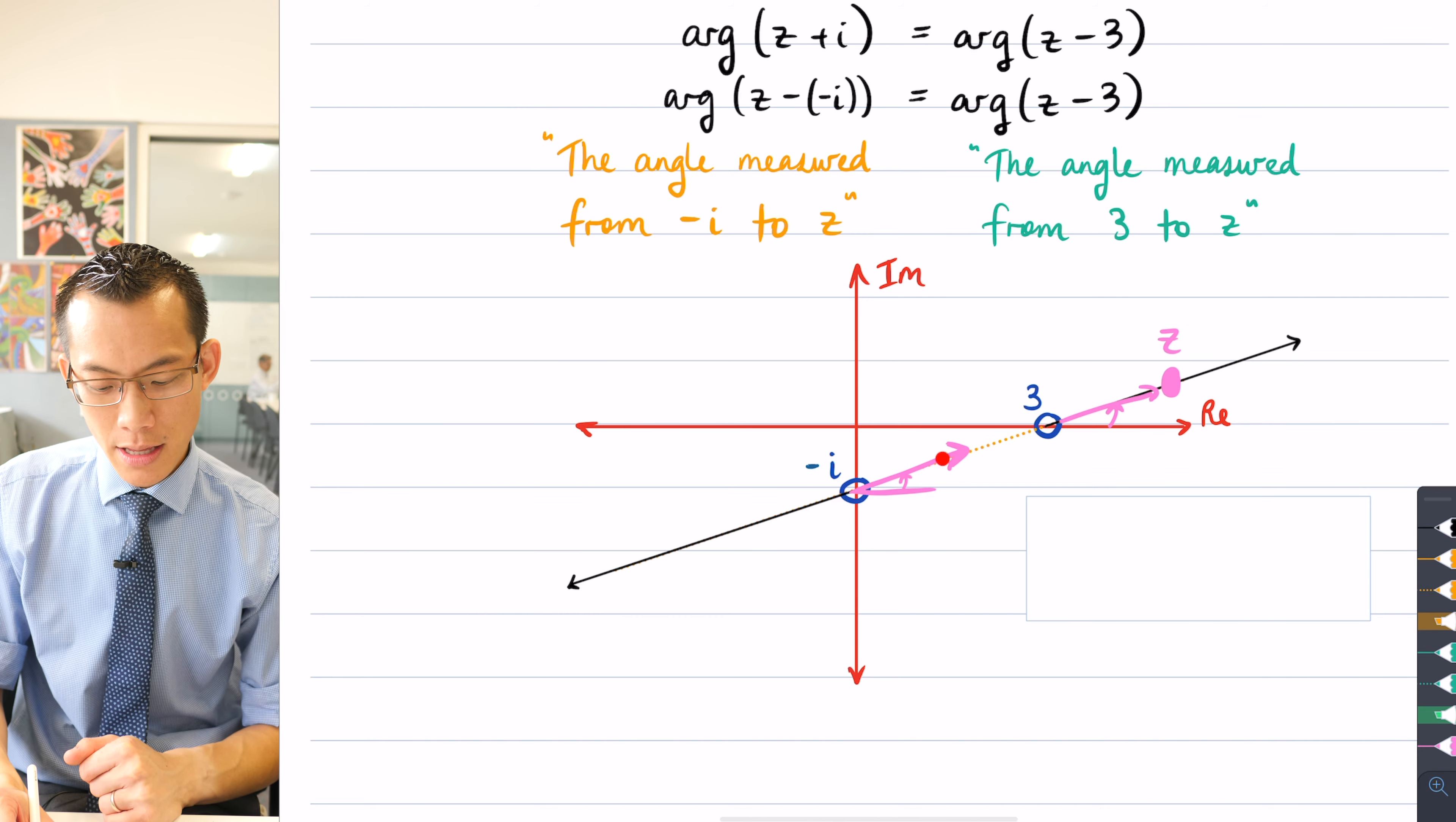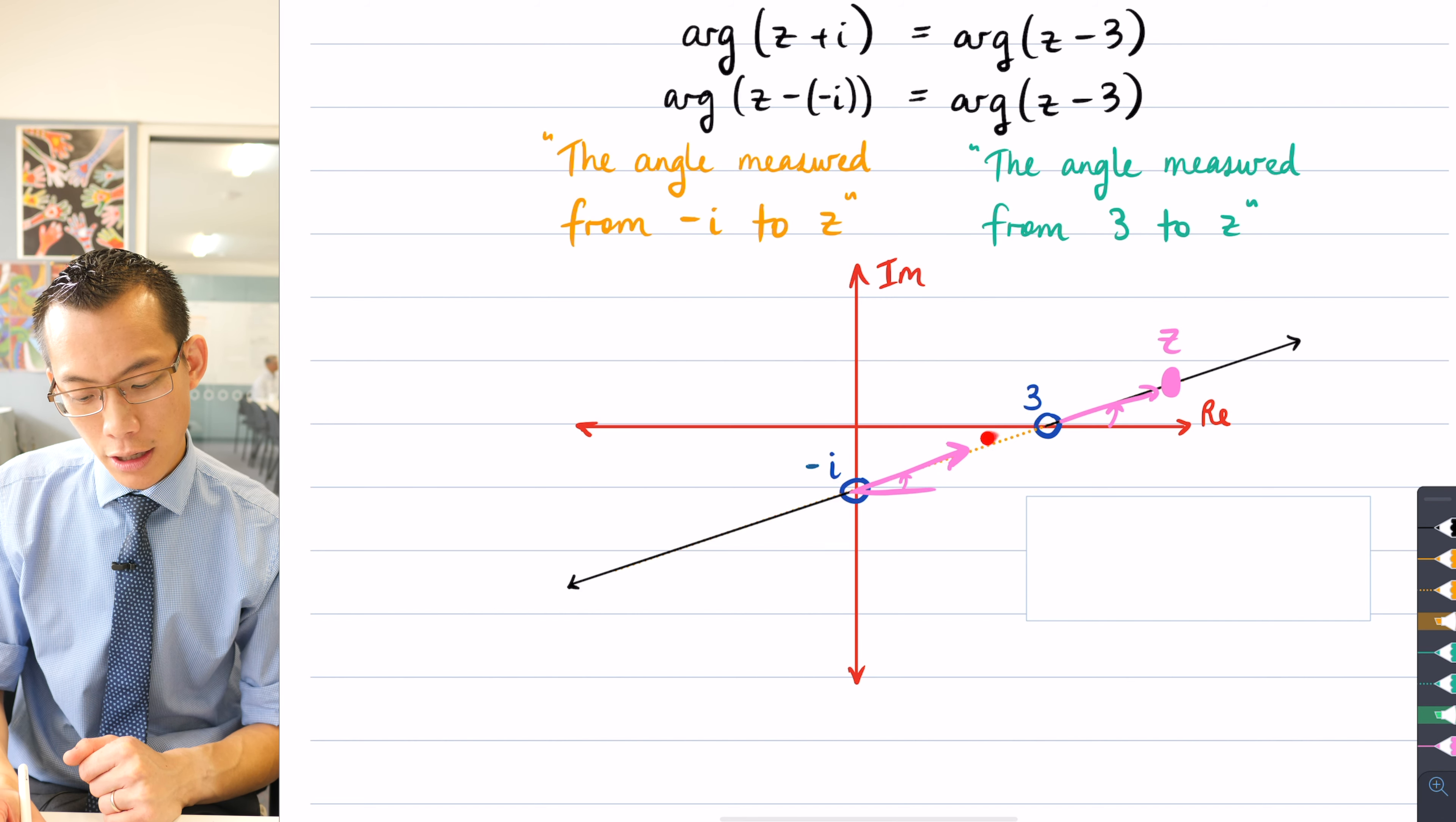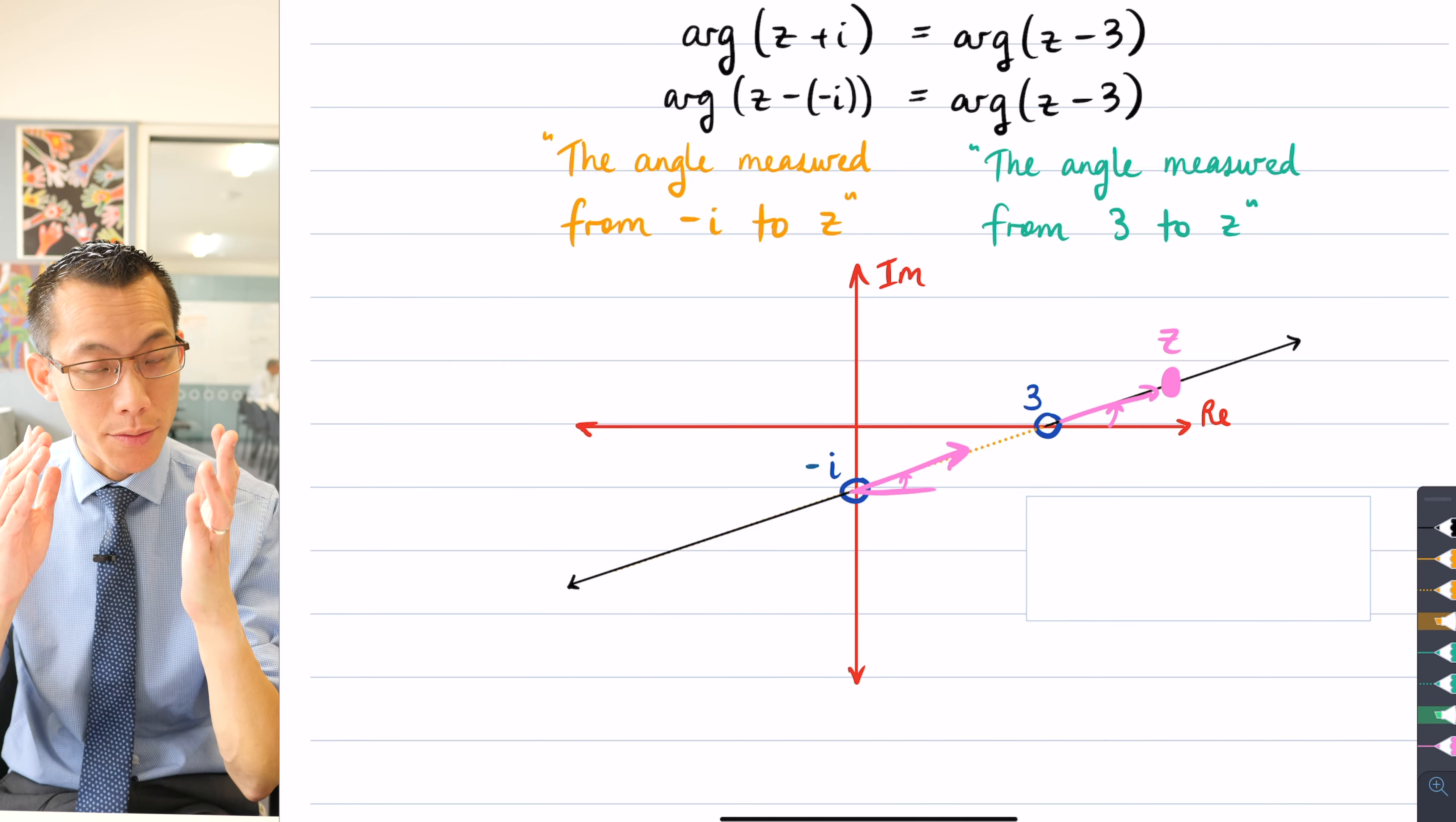However, we did notice that in the middle here, if we picked a spot like this, the argument from minus i would be different to the argument from 3, and so we excluded that little interval in the center.